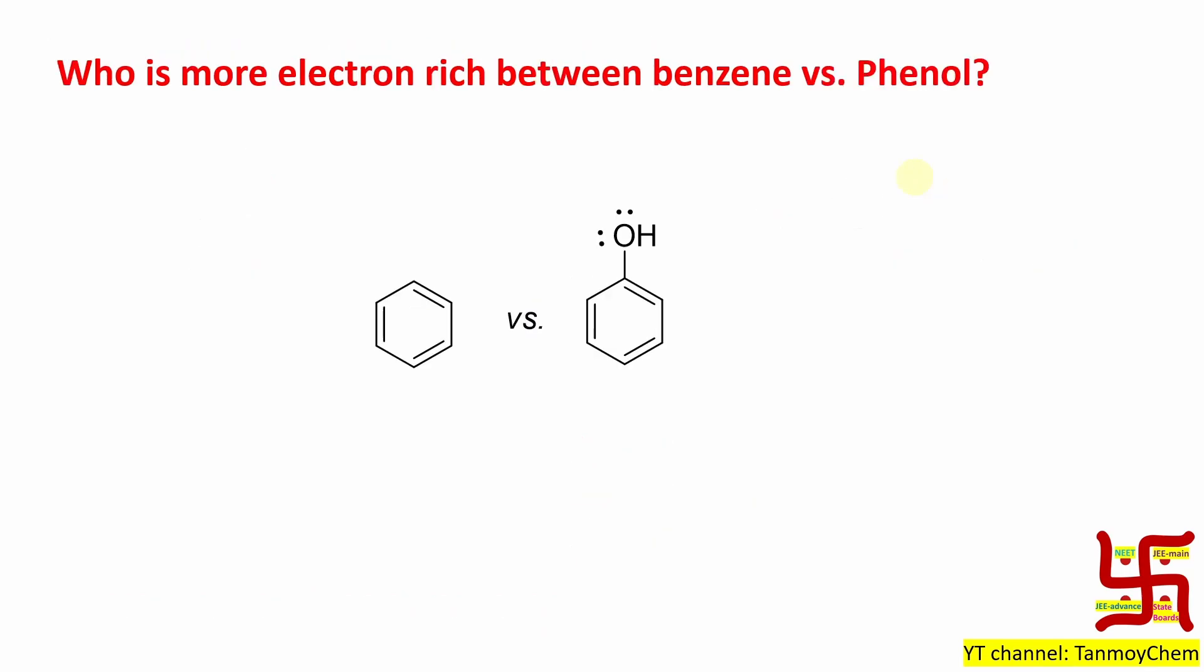Now if you look at here, who is more electron rich between benzene and phenol? Obviously phenol. Why? Because one of the lone pairs on this oxygen moiety can participate in resonance.